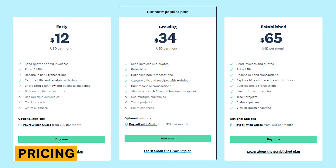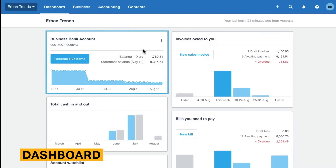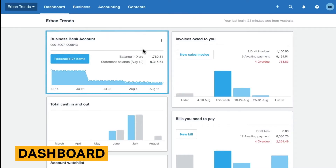Additionally, Xero doesn't offer accounting, bookkeeping, or tax services, which many alternatives have. Xero pricing begins at $12 per month and costs up to $65 per month for the most advanced plan. Xero makes recommendations about which plan will be best for you based on your company's size and growth.